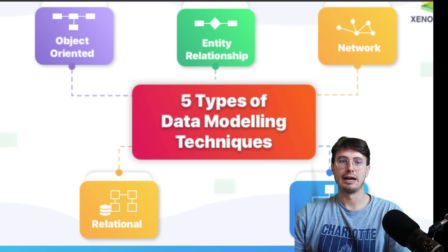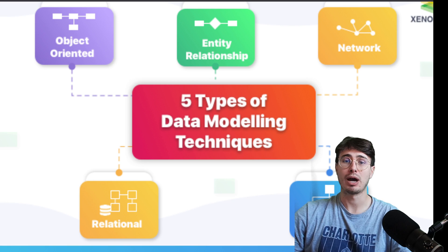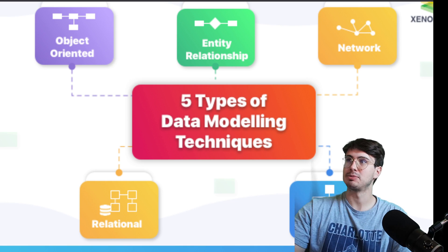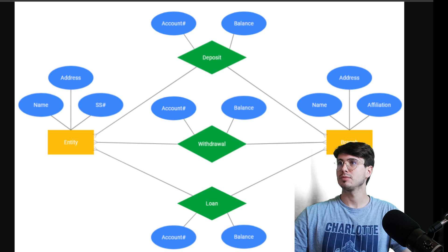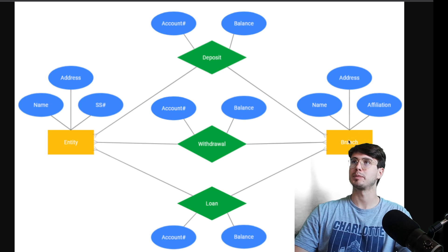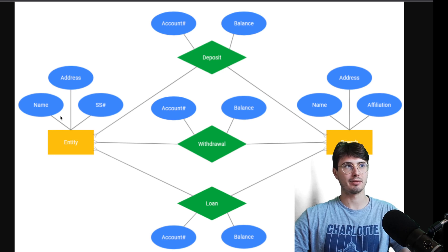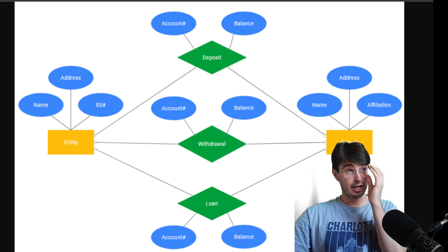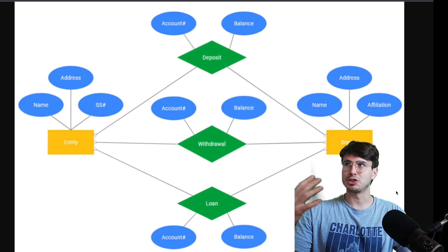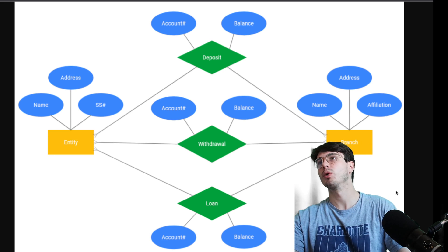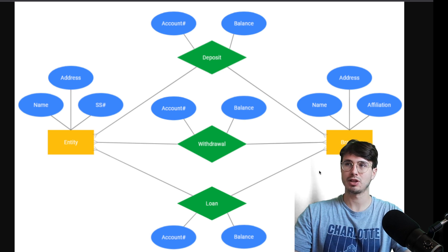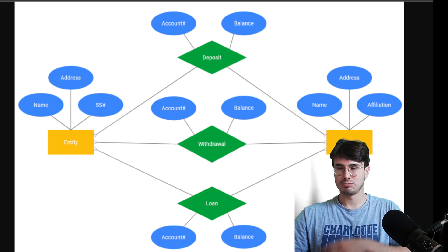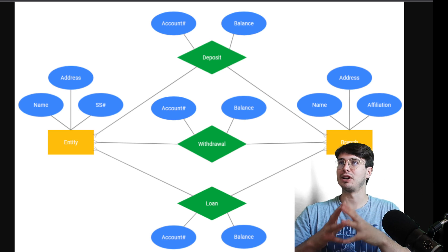The entity-relationship model is widely used in database design. You have entities, attributes, and relationships amongst entities, giving you a clear logical view of the data. For example: a bank branch with address, name, and affiliation; accounts with number, balance, deposits, and withdrawals. It's great when you have things that all relate to each other with really defined relationships — like always having a user who deposits or withdraws — giving you a clear model of how data flows.